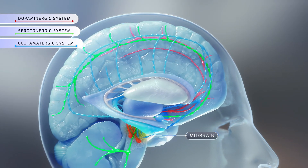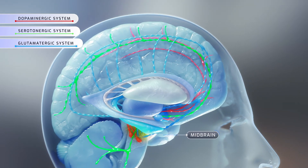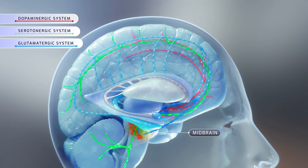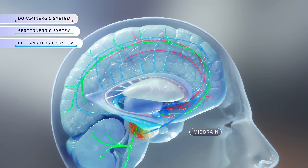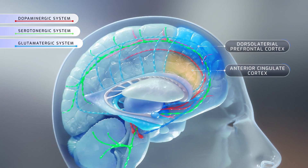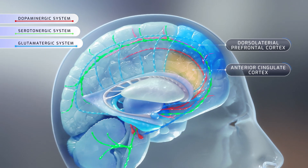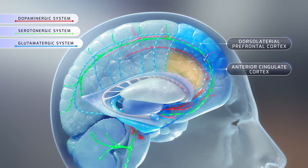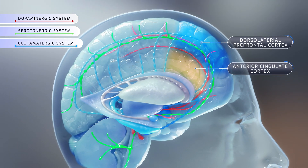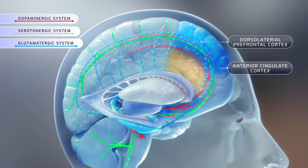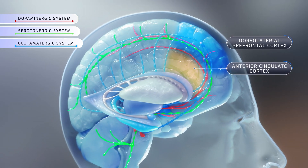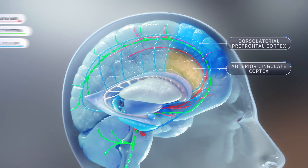Glutamatergic hypoactivity in the midbrain can lead to altered dopaminergic activity, and serotonin hyperactivity within the anterior cingulate cortex and dorsolateral prefrontal cortex can give rise to negative and cognitive symptoms.